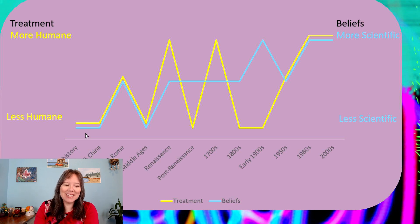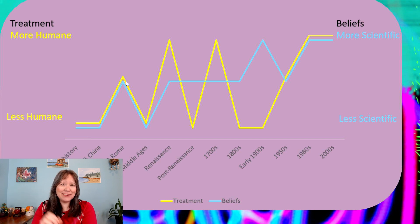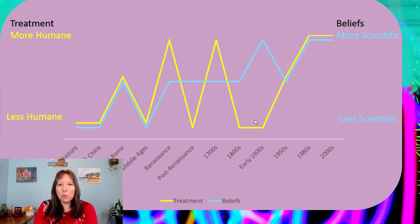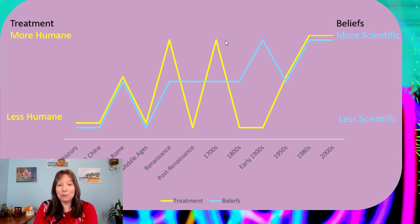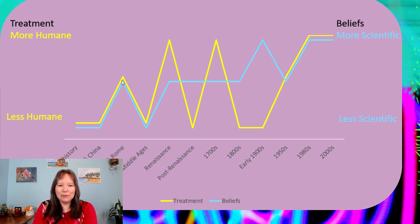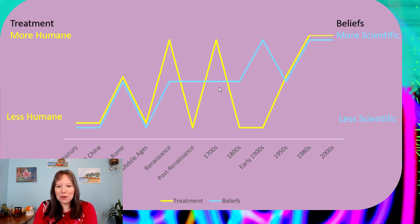In ancient Greece and Rome, we began to have a little more scientific understanding — very imperfect of course — but people were treated with a bit more compassion. That dropped down in the European Middle Ages but peaked again in the Renaissance, when compassionate care came about. In the post-Renaissance and 1800s, asylums were big, with two major phases. In between, people were treated in smaller group homes. So we've gone through waves: exiling people, then putting them in asylums, then compassionate care. The general idea is that it has come in waves.